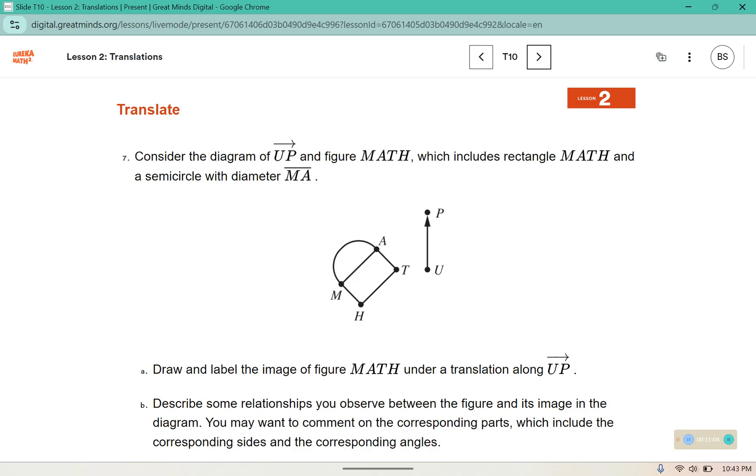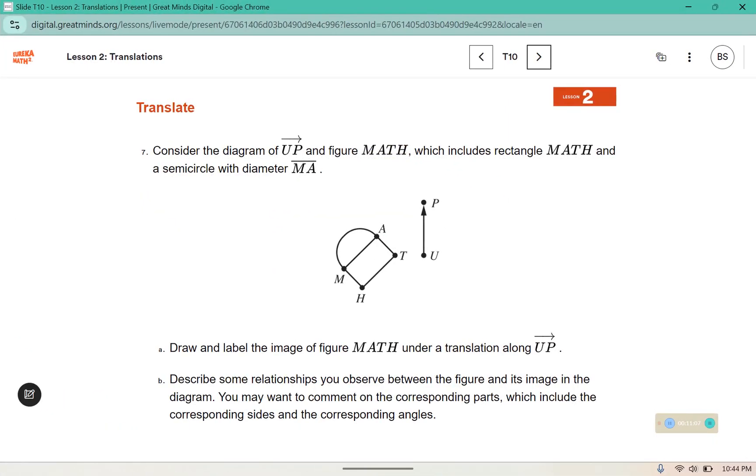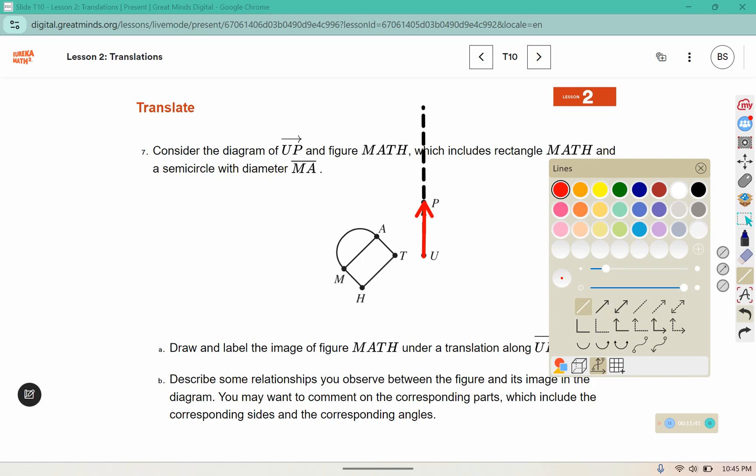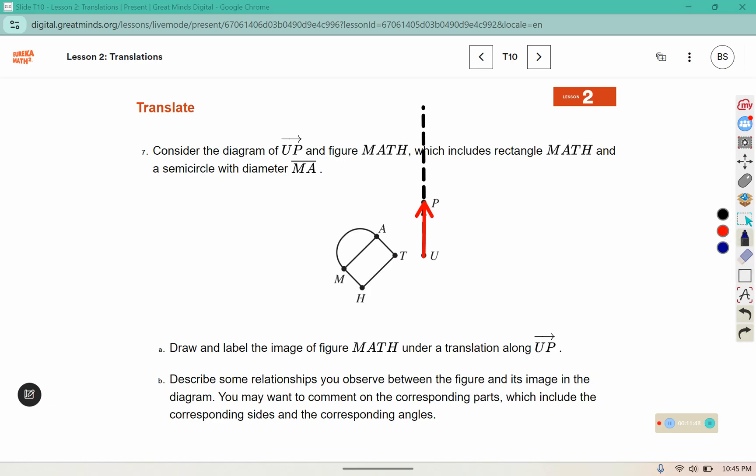Consider this diagram of UP and figure MATH which includes the rectangle MATH and a semicircle that has a diameter with segment MA. Draw and label the image of figure MATH under a translation along vector UP. Begin by extending a line through the vector using a straight edge. Then you are going to trace the vector and the image on tracing paper. UP and the image.